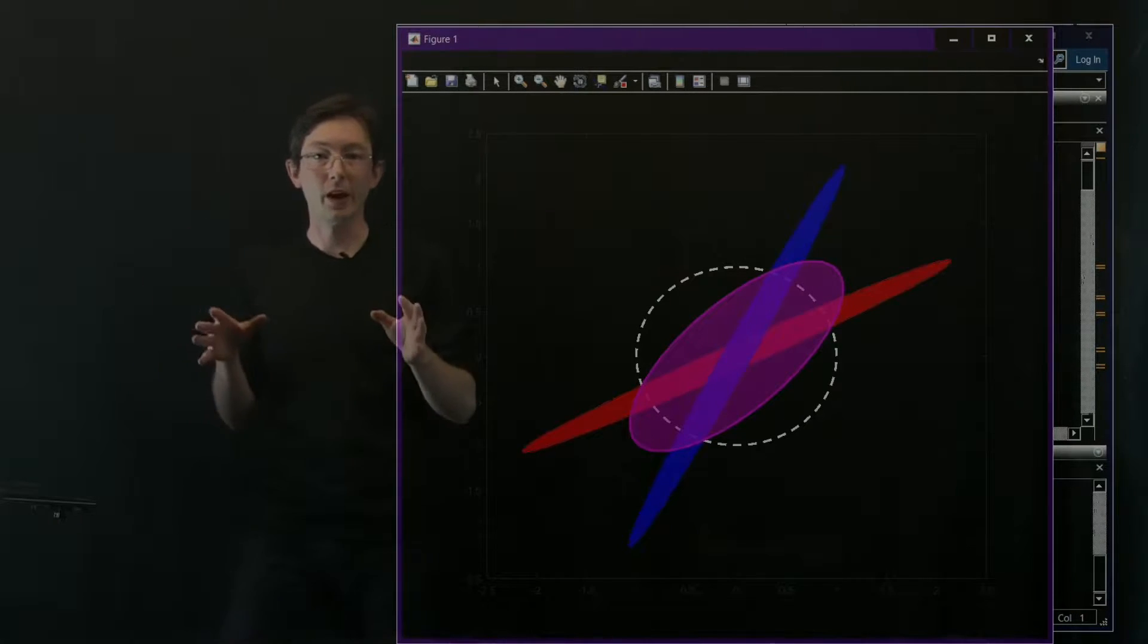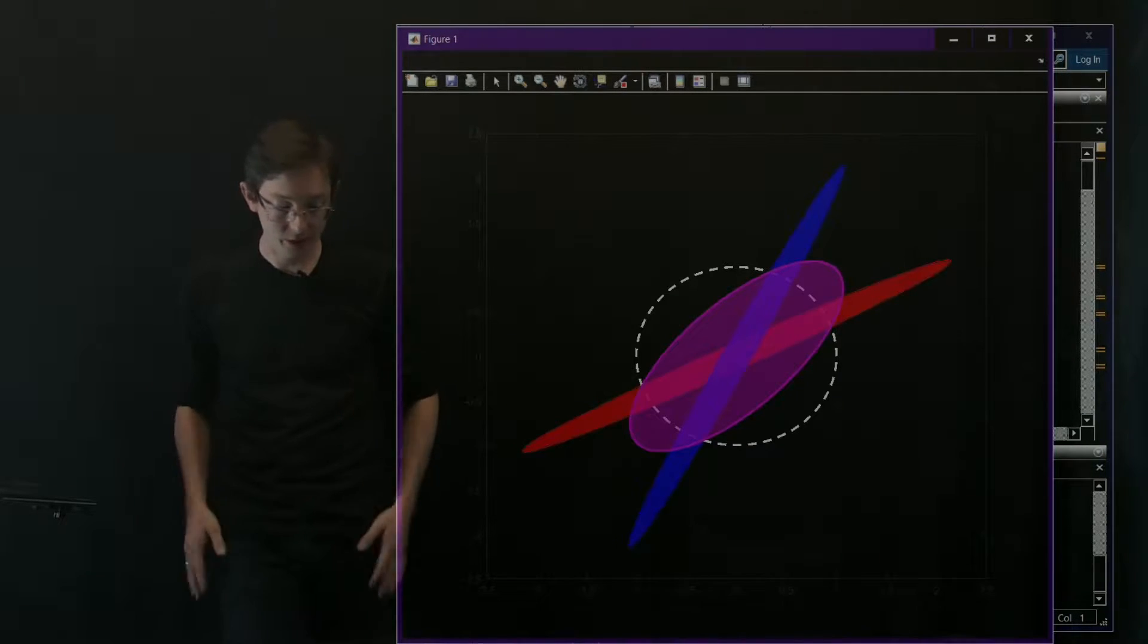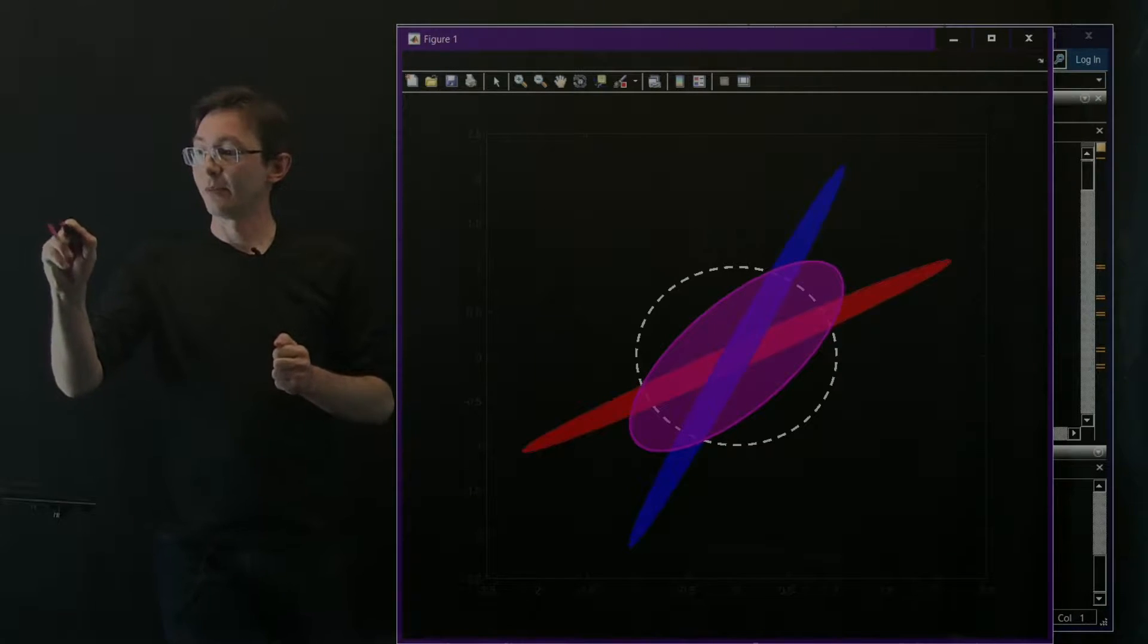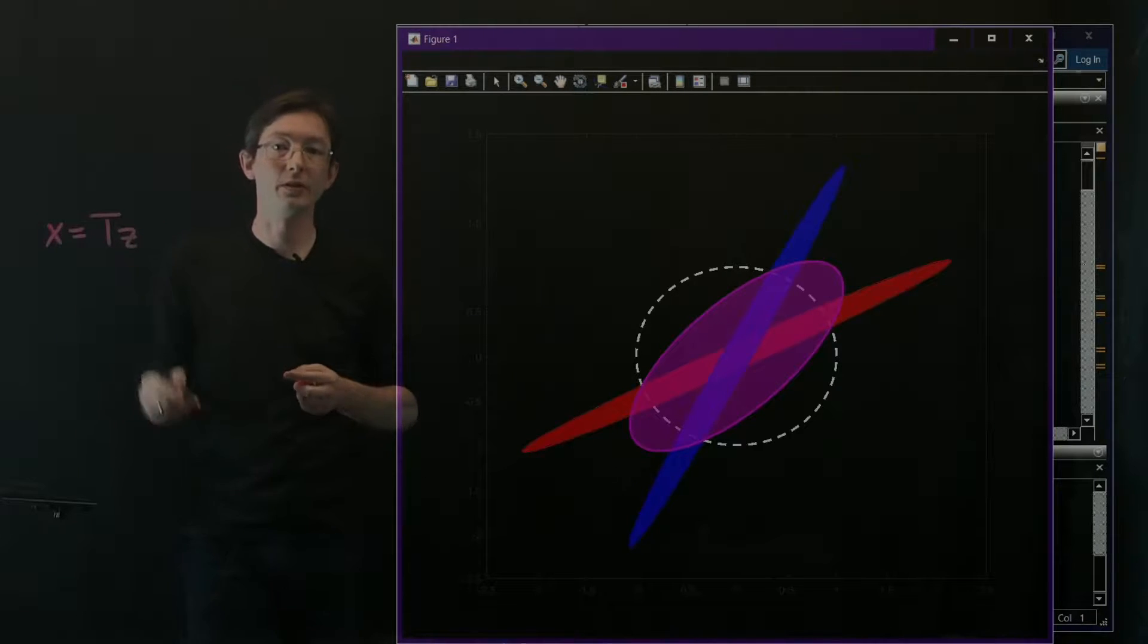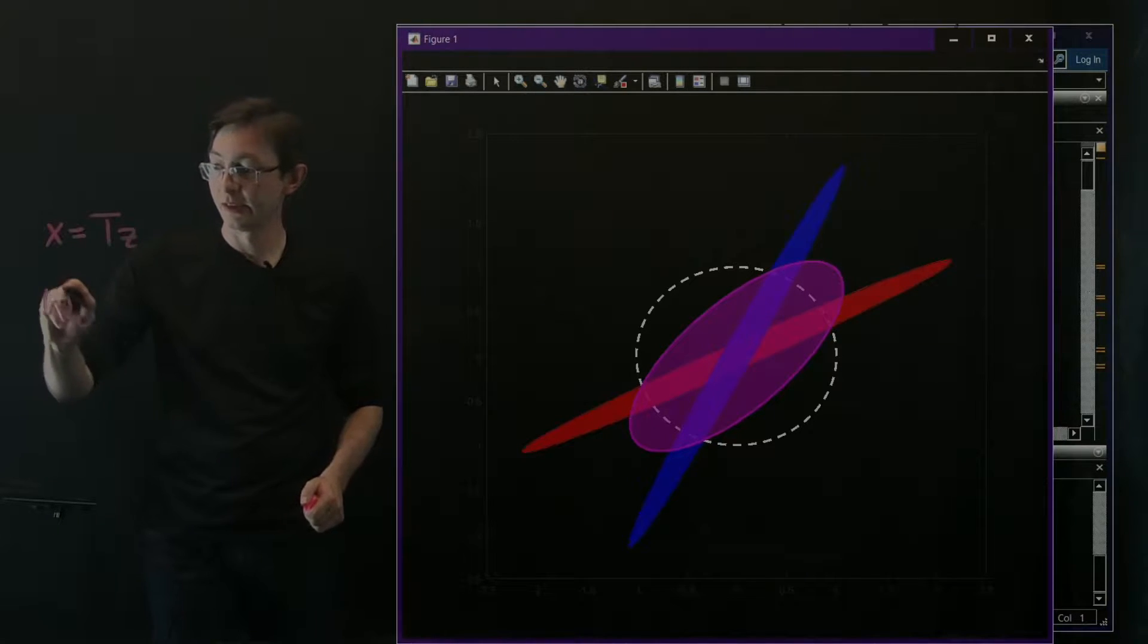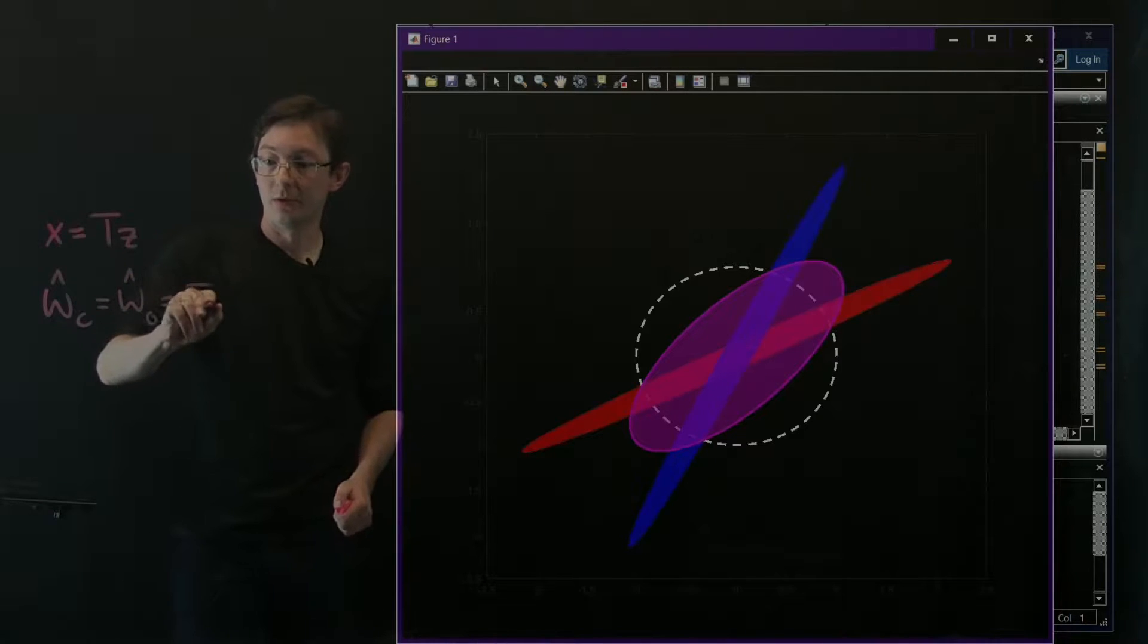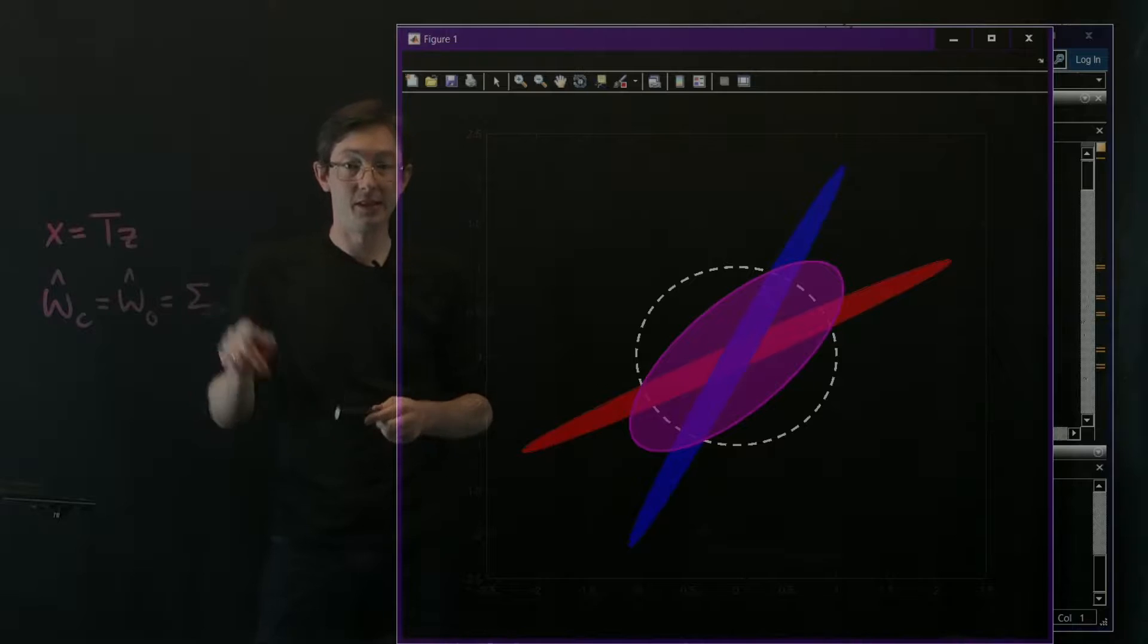Welcome back, everyone. In the last few lectures, we've been looking at balancing transformations. Those are coordinate transformations from some original x-coordinates into some new z-coordinates, so that my controllability and observability Gramians in these z-coordinates WC hat equals WO hat equals a diagonal and hierarchically ordered matrix sigma.